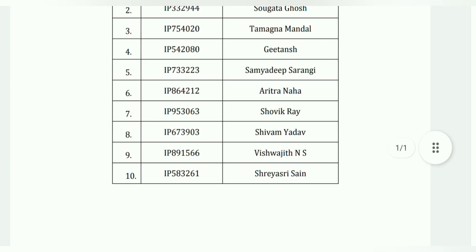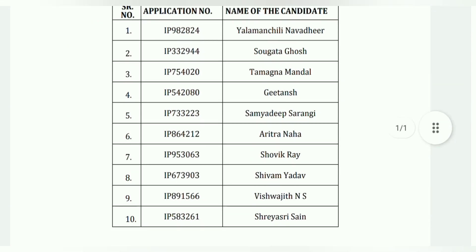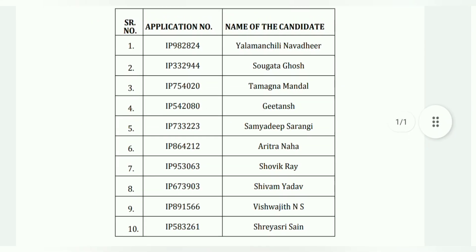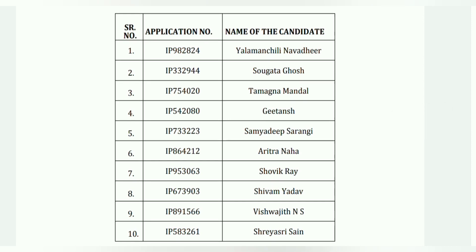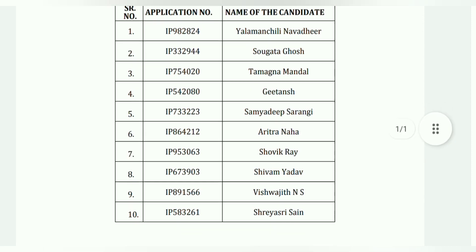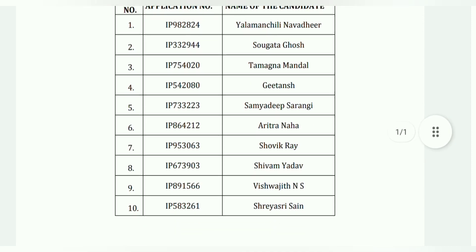Total 10 students selected. Application number, name of the candidate — you can see our students, 10 students selected here. You can get admission, and these students will go through the offer letter later. Some form will go, medical report will be filled up, medical form will go, and 15,000 rupees will be paid.